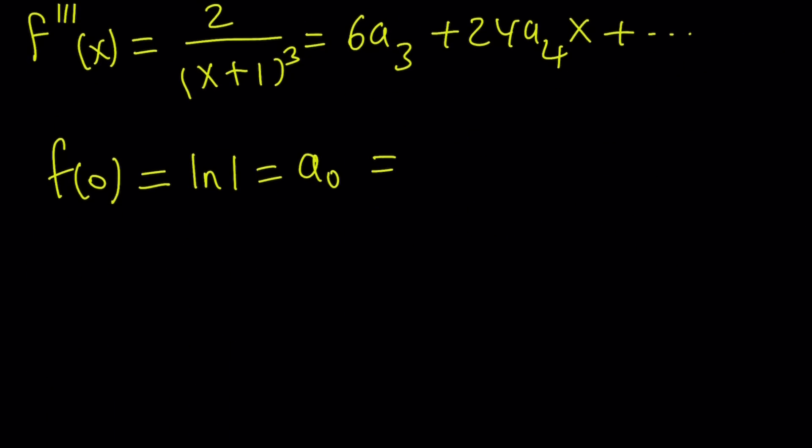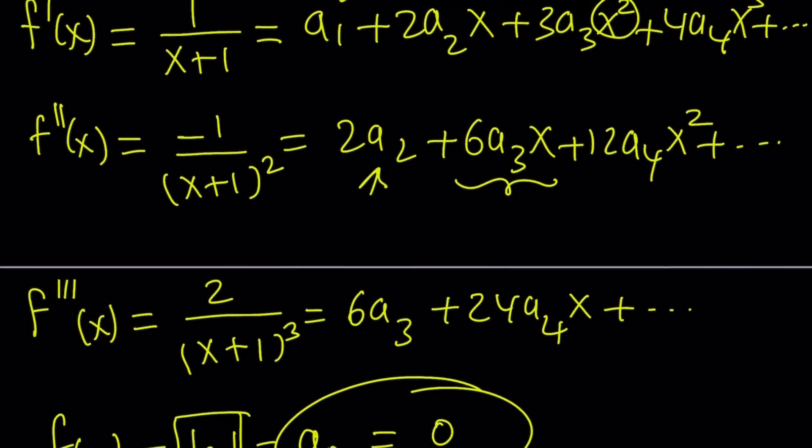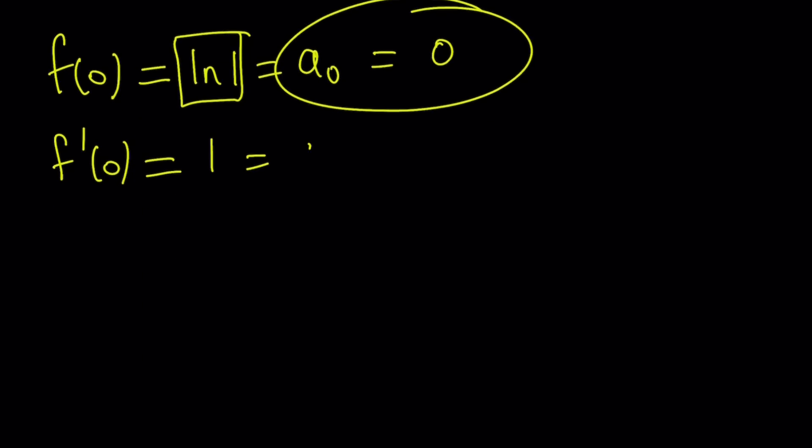Now how do you find f(0) here? Here, everything will be 0 with x. So you're going to end up with a₀, which is a₀. So it's going to be 0 because ln(1) is 0. So from here, we get a₀ is 0. And if you take the first derivative and replace x with 0, on the left-hand side you're going to get 1, and on the right-hand side you're going to get a₁. So 1 equals a₁.